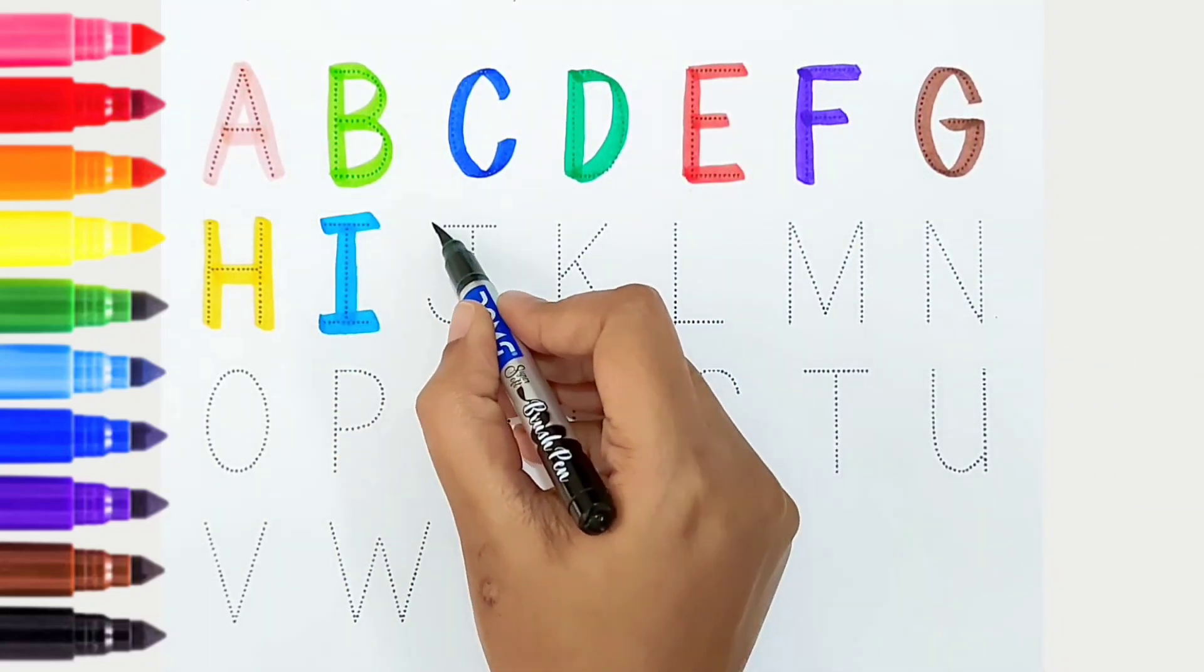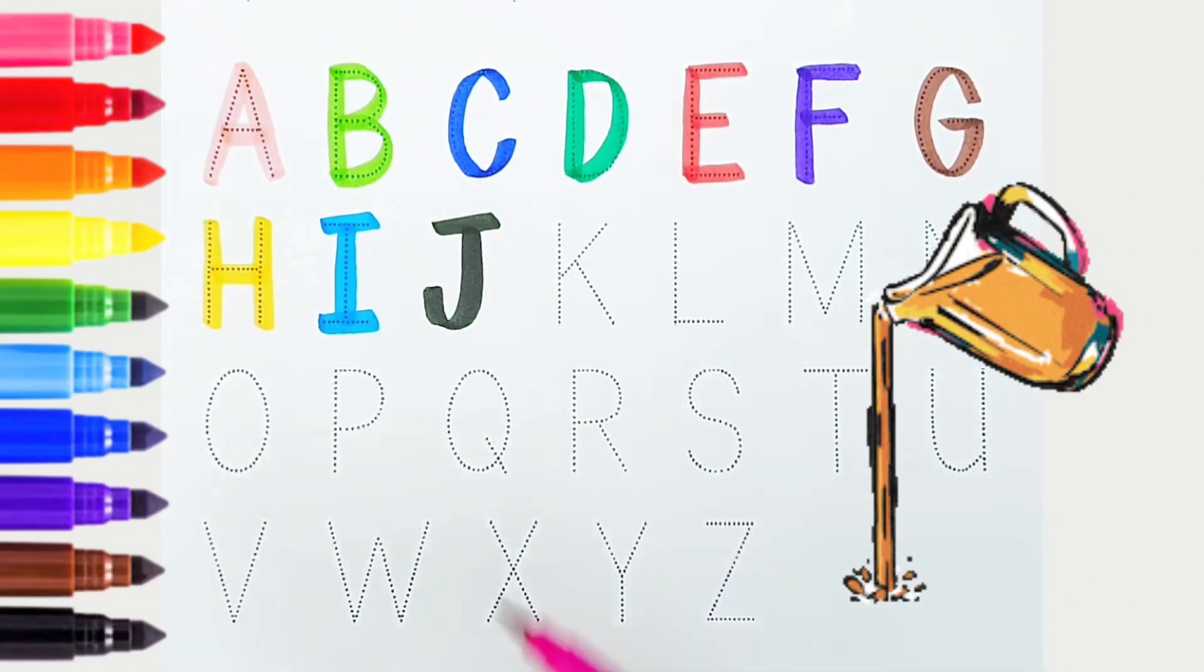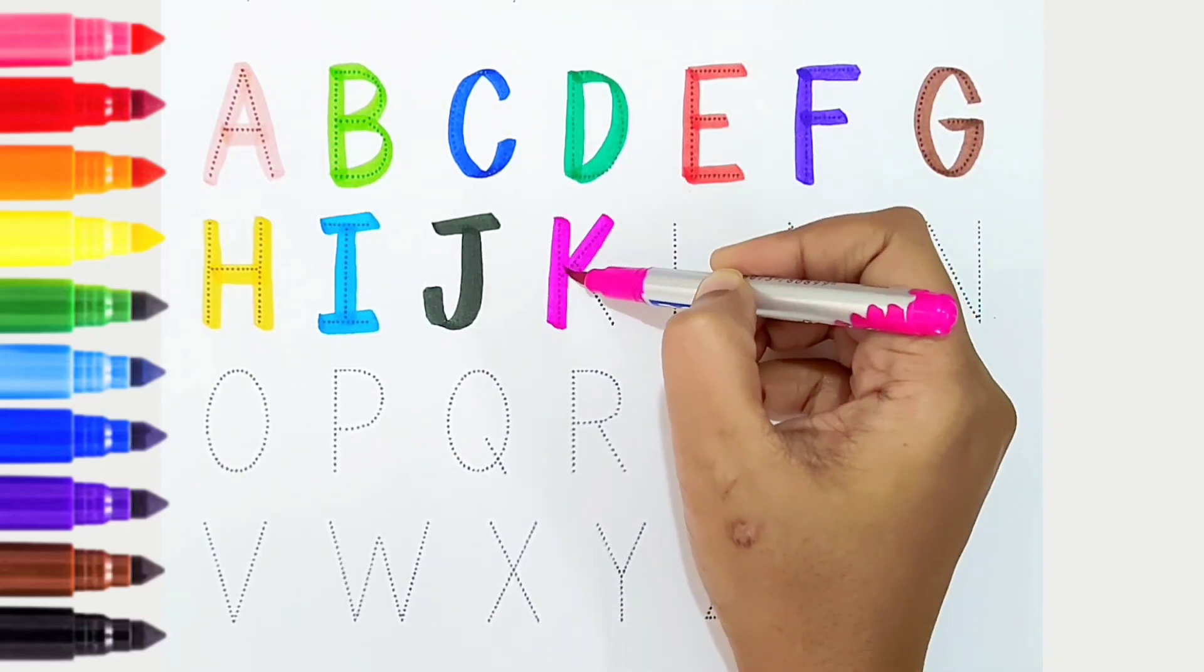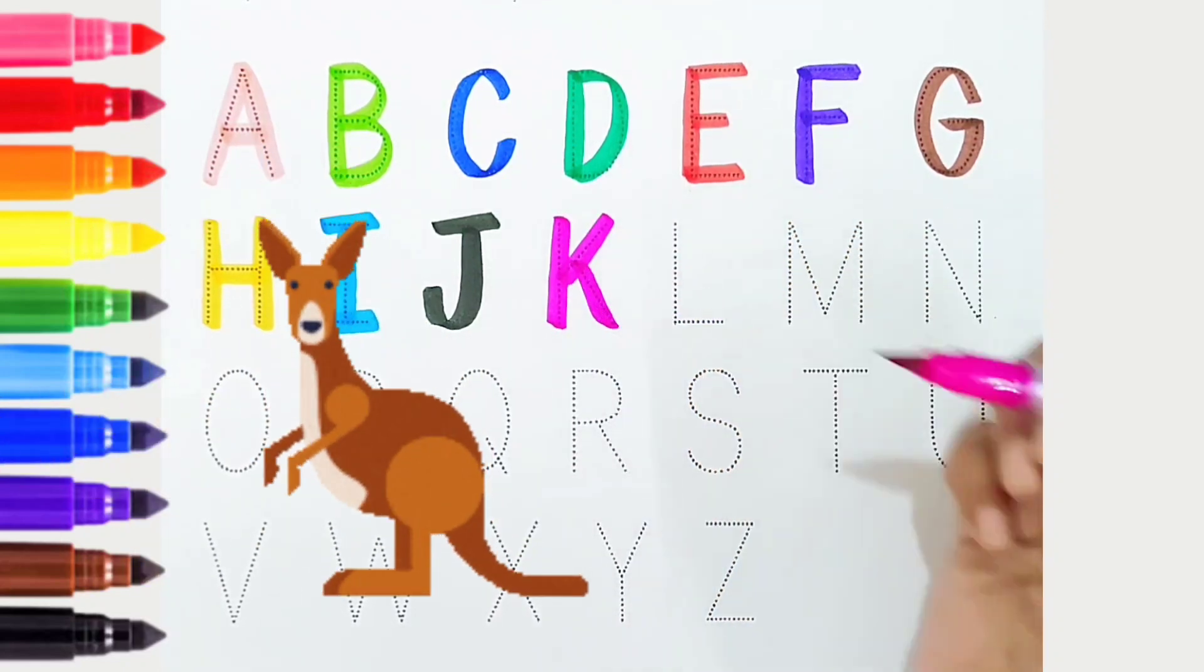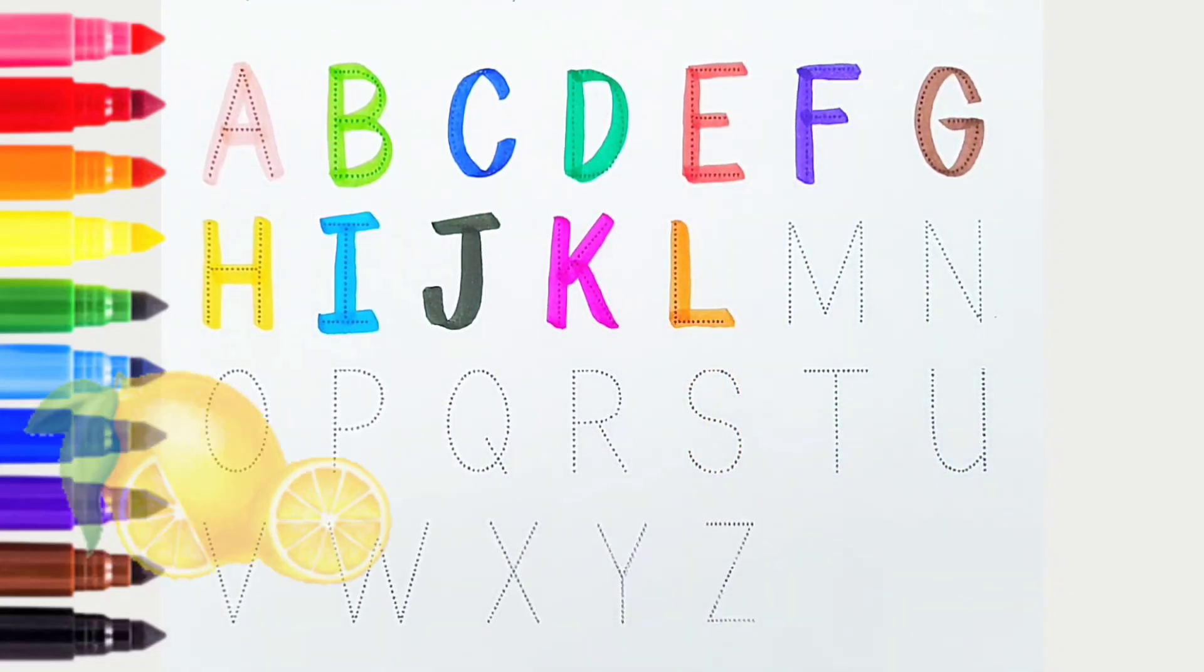J, black color, is for jag. K, dark pink color, is for kangaroo. L, orange color, is for lemon.